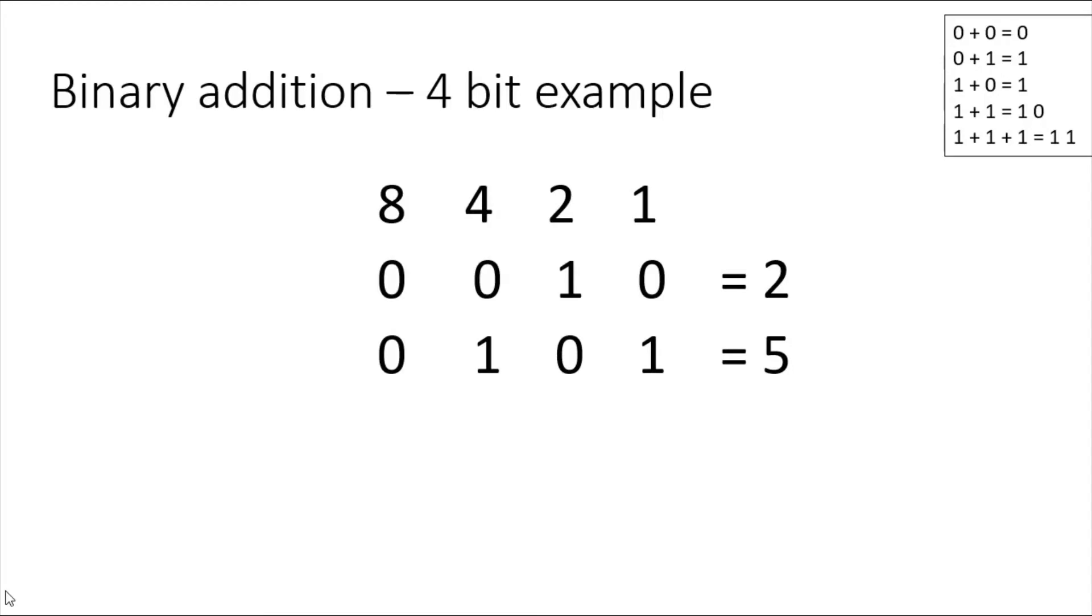So just simply add up the columns: zero plus one is one, one plus zero is one, zero plus one is one, and zero plus zero is zero. So now work out four plus two plus one is seven, and I know that two plus five is seven. So that's an example there.